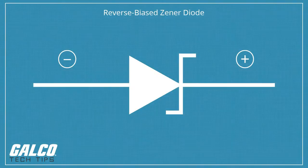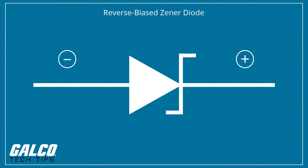Zener diodes are designed to be operated in reverse bias mode, providing a relatively low, stable breakdown or Zener voltage at which they begin to conduct substantial reverse current.